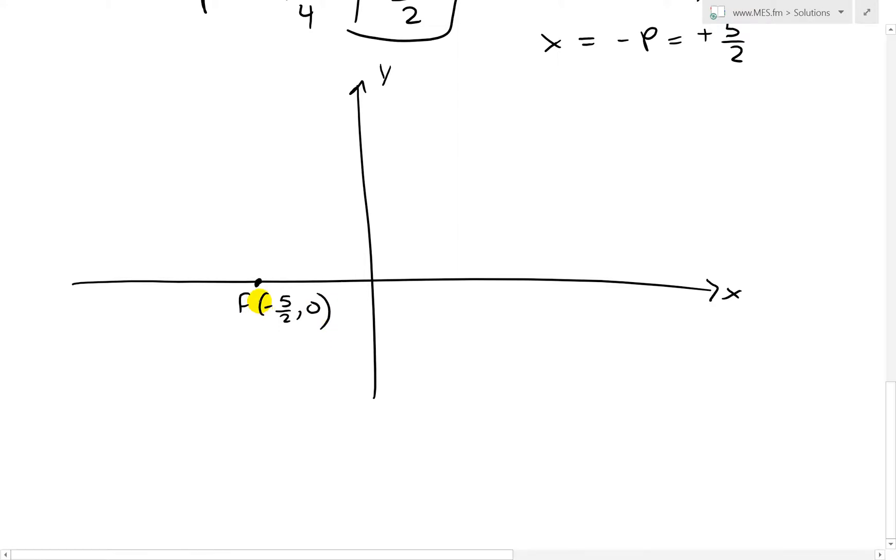And then the directrix is going to be just exactly the distance across there, 5/2 on the positive side, and that's going to be just drawn like that, so we get roughly, you know, move it over to roughly just the exact center there.